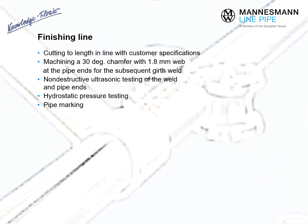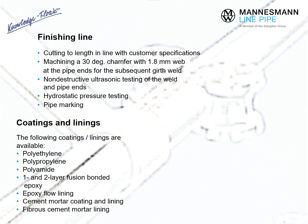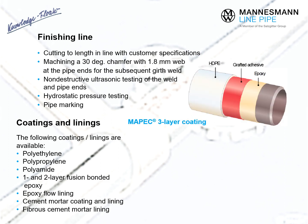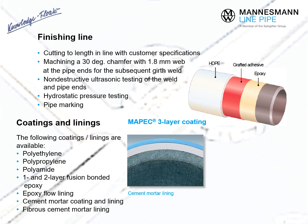The finishing line completes the processing steps to prepare the pipes for the customer's application. It includes: cutting to length as specified by the customer; pipe end bevelling as preparation for stringing by means of girth welds; non-destructive ultrasonic testing of the weld and pipe ends; hydrostatic internal pressure testing; geometric checking and pipe marking. In addition, the pipes are coated and/or lined to the customer's specifications, with options including multi-layer coating for corrosion and mechanical impact protection, or cement mortar lining for drinking water pipes.